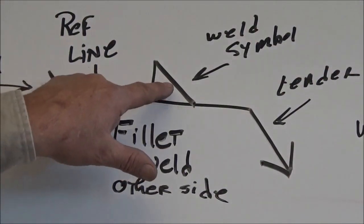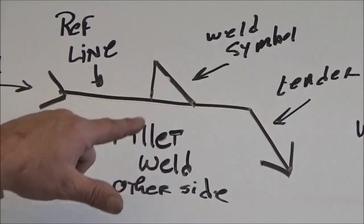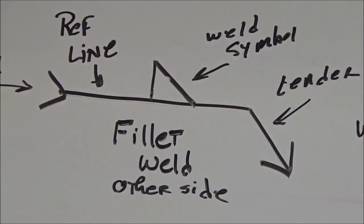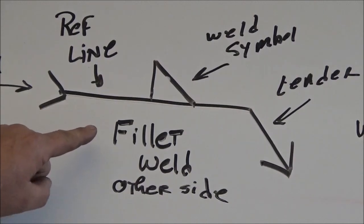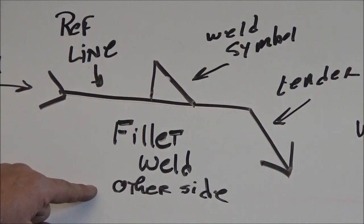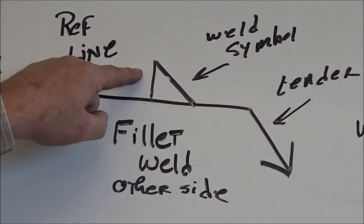So this is the weld symbol, but when you put the weld symbol together with all these other components, it becomes a welding symbol. And you can tell that this welding symbol here is telling us that we need a fillet weld on the other side. And we know it's the other side because the weld symbol is on the upper part of the reference line.